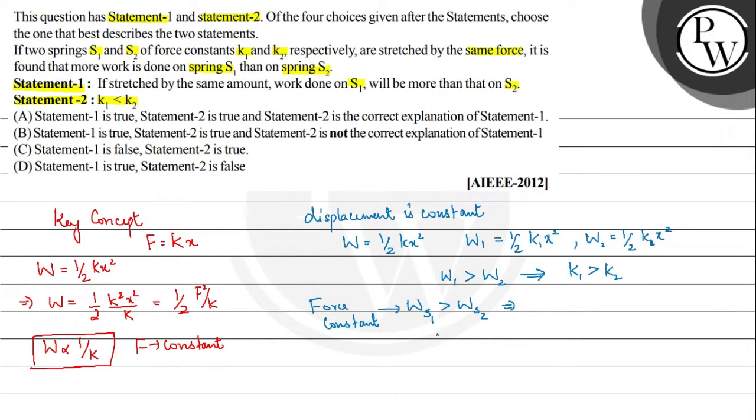But according to this, we know that the work done is inversely related to K. Then we shall have in that case as F square by 2K1 shall be greater than F square by 2K2. So according to this, we can say that K1 is supposed to be less than K2.